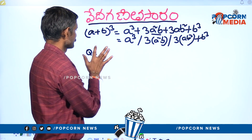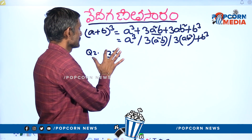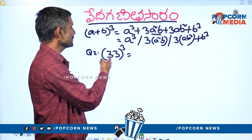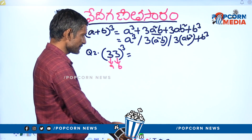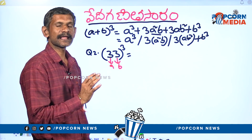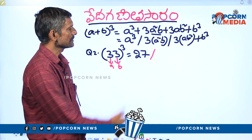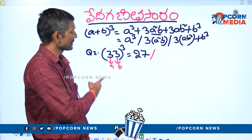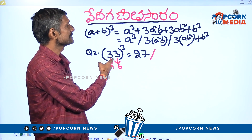Question number 2. The answer is 33 whole cube. 33 whole keep — a keep is 30, b keep is 3. A cube: 3 times 3 is 9, 9 times 3 is 27. Director — three keep. Number: 3, 2, 3, 2, 3, 2, 3.